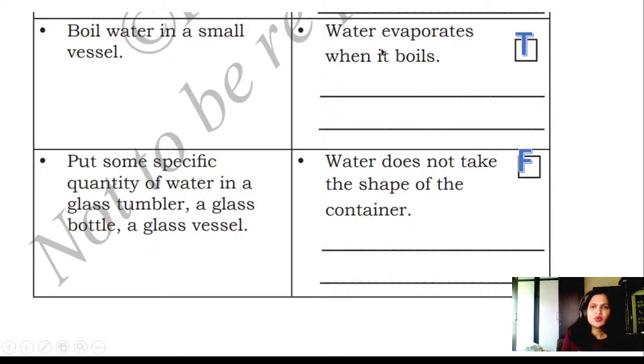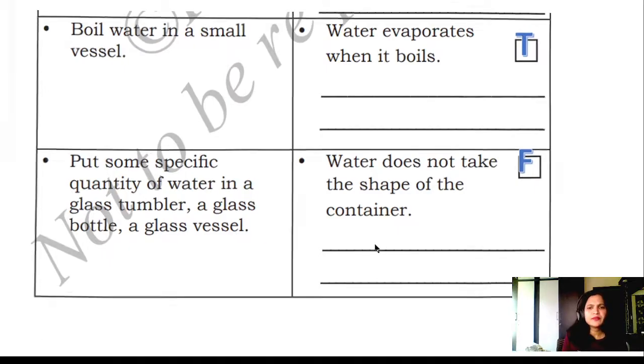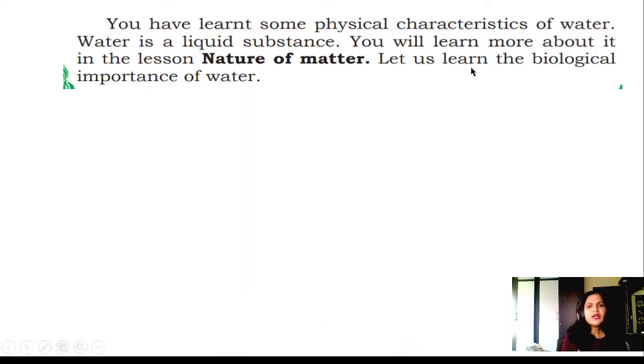Boil water in a small vessel. Water evaporates when it boils. True. Put some specific quantity of water in a glass tumbler and a glass bottle, a glass vessel. Water does not take the shape of the container. False. It takes the shape of whichever vessel you add the water to. You have learned some physical characteristics of water. Water is a liquid substance. You will learn more about it in the lesson Nature of Matter.